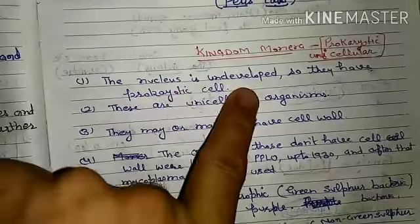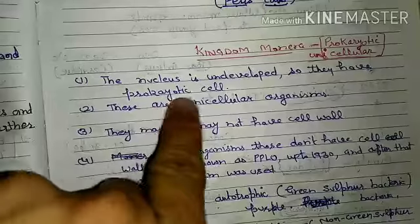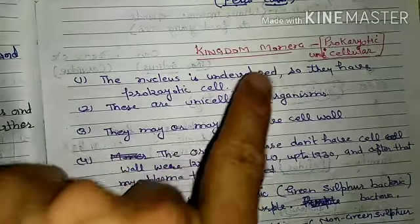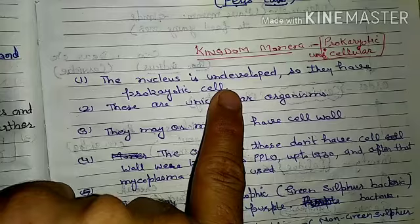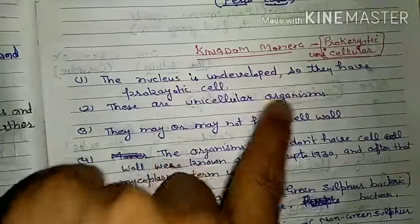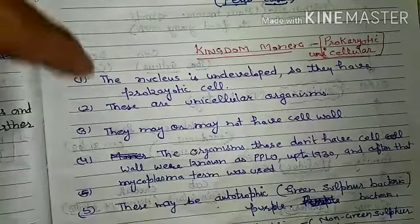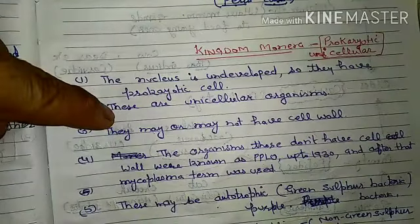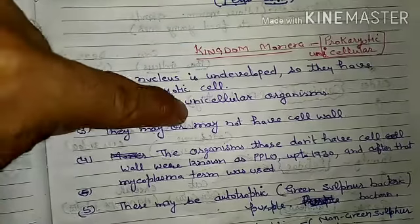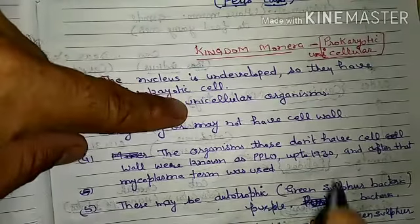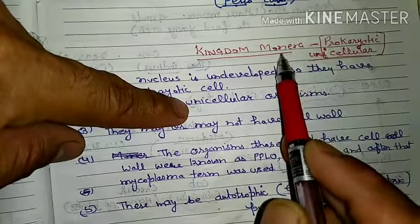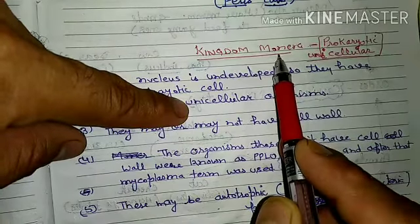The nucleus is undeveloped in these organisms, so they have prokaryotic cells. In Kingdom Monera, organisms have an undeveloped nucleus and prokaryotic cells. They are unicellular organisms. So two key points: organisms in Kingdom Monera are prokaryotic and unicellular.